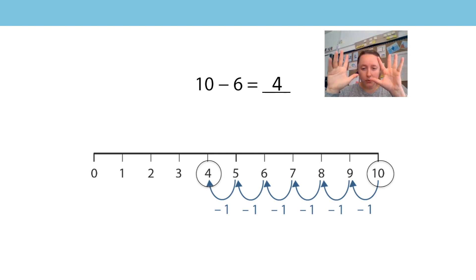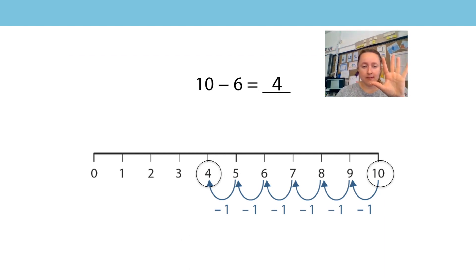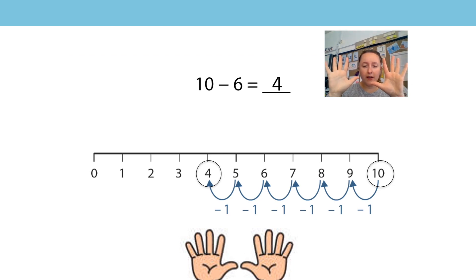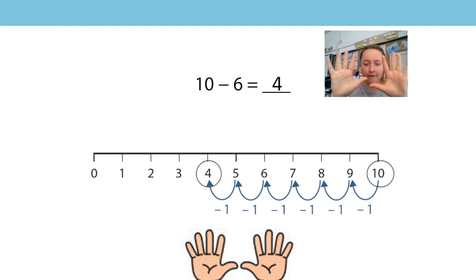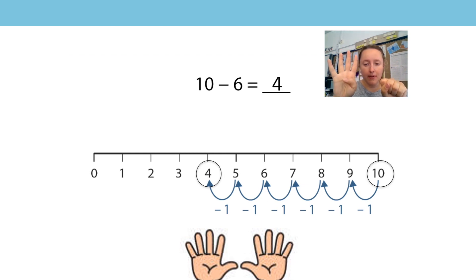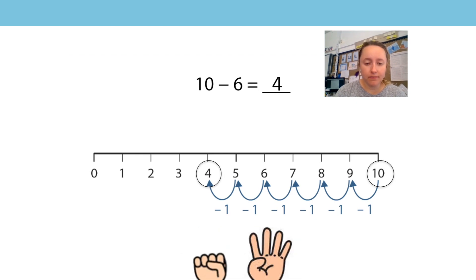Now I want you to hold up your hands and we're going to do that on our fingers too. We're going to hold up 10 fingers and subtract 6 of them. Watch me very, very carefully. 10 subtract 6 — and what number am I left with? Let's see on the screen too. That's right, I'm left with 4 fingers. But I think this takes a very, very long time.